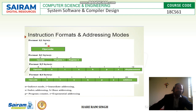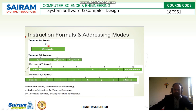Now, SIC/XE supports 4 types of instruction formats. Format 1 is 1 byte (8 bits). Format 2 is 2 bytes (16 bits): the first 8 bits are for the opcode, then 4 bits for register 1 and 4 bits for register 2. Format 3 is 3 bytes (24 bits).